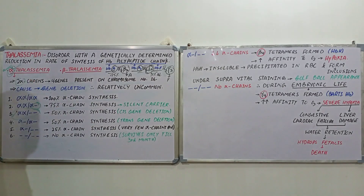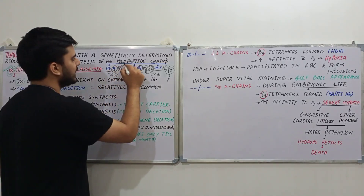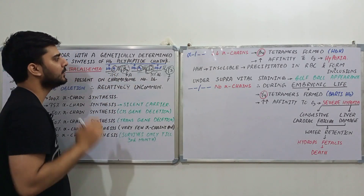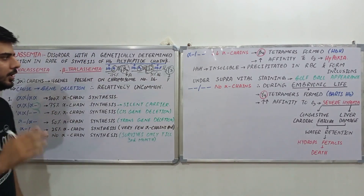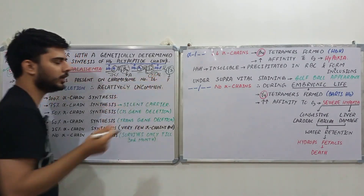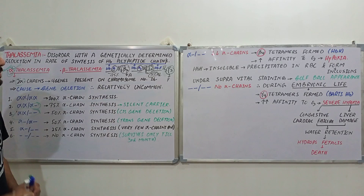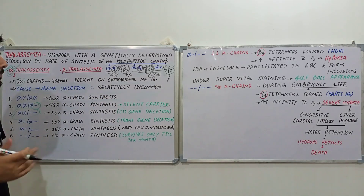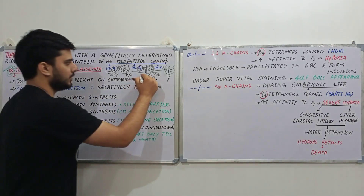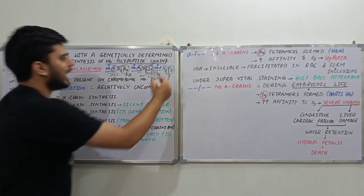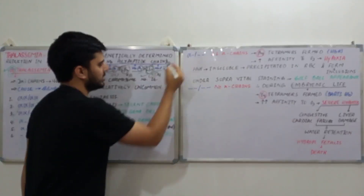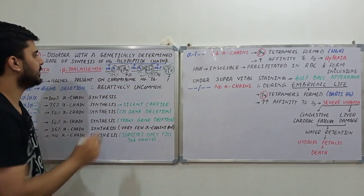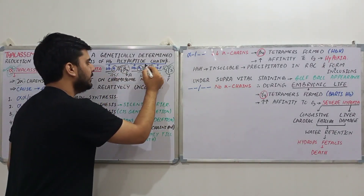We will discuss only alpha thalassemia and beta thalassemia. The delta chain is very rare — it constitutes only 3% of adult hemoglobin, so its presence or absence is not of much clinical significance. Similarly, gamma chain deficiency is very rare in nature, so we are not going to discuss gamma thalassemia either.